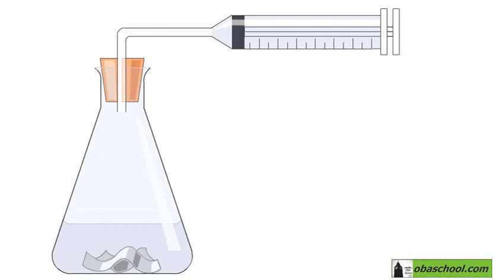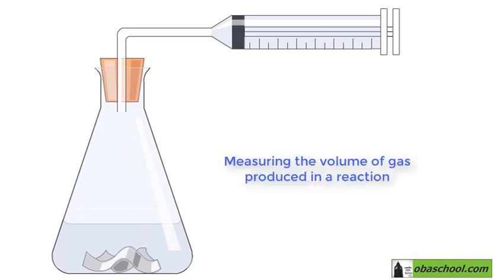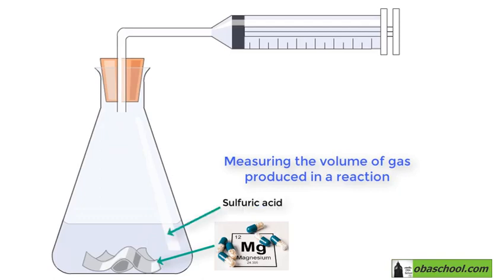In this simulation we are going to explore one way to measure the volume of gas produced in a reaction. Magnesium reacts with dilute sulfuric acid, giving off hydrogen gas. We can measure the volume of gas produced using a syringe.